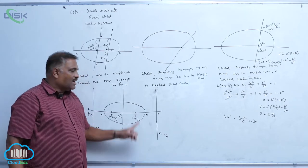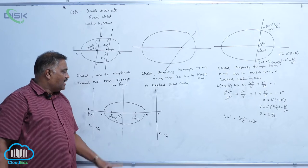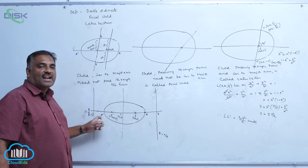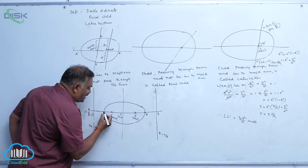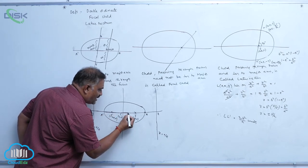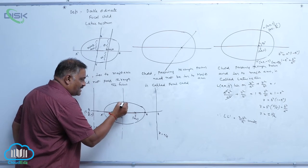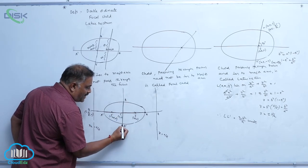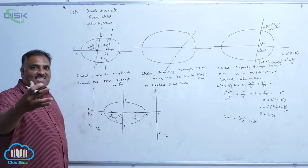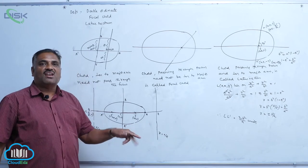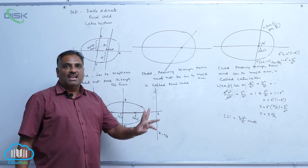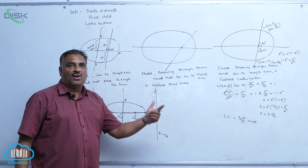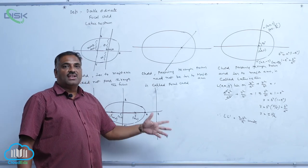By symmetry, the ellipse has a second focus and a second directrix. The major axis is greater in length, the minor axis is less in length, and the point of intersection of the major and minor axes is called the center of the ellipse. Because the ellipse has a center, it is called a central conic.